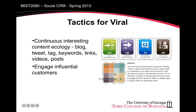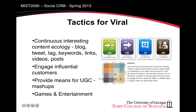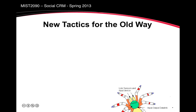Second, keep in mind that certain users are more influential than others. Some people simply have more people that pay attention to them. There are a variety of websites, including Klout, that track and rank the influence of different people. It is important to engage influential people and get them to actively promote your content. Finally, there are different forms of content that tend to be more viral than others, such as those that allow user-generated content and games and entertainment. There is a movement toward the gamification of company messages.